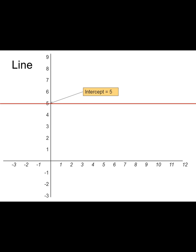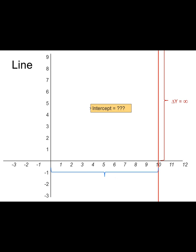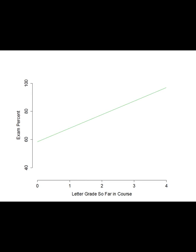A special case: if the intercept is 5 and the change in y is zero while x keeps going forever, the slope is zero divided by infinity — undefined. The equation is simply y equals 5. Similarly, a vertical line has no intercept and an infinite change in y for a finite change in x, so we'd just say x equals 10. These edge cases don't occur in real regression — it's just remembering how lines work mathematically.